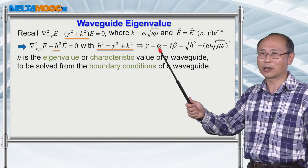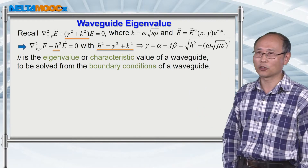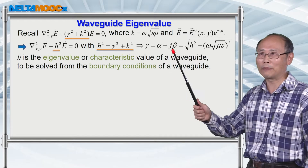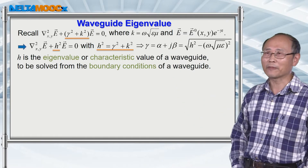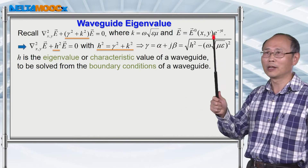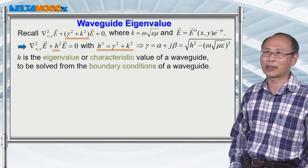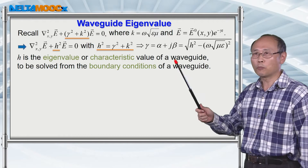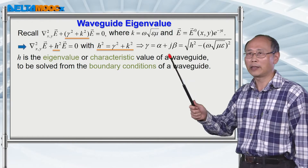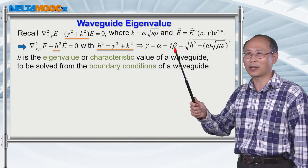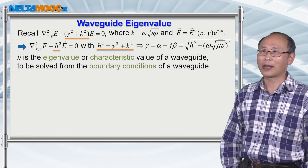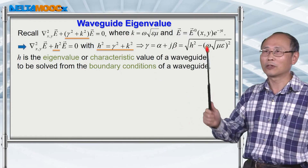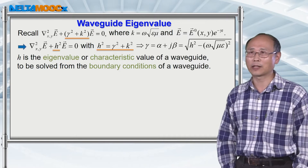Usually there's a real part and imaginary part associated with gamma. But if you only have the real part without the imaginary part, this means that the wave cannot propagate. If you have exponential minus alpha z, then the wave will be attenuated inside the waveguide structure. To propagate the field, you need to have a j beta defined by this expression. Given a real beta value, which is the imaginary part of gamma, you're going to have a propagating mode inside the structure.